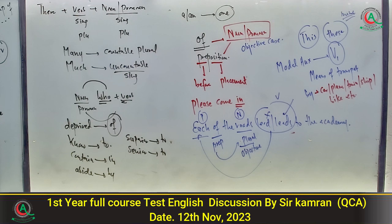MCQ 192: Synonym of 'amass'۔ Synonym وہ ہوتا ہے جس کا similar meaning ہو۔ Amass کا مطلب ہے to collect something — option number A is the correct one۔